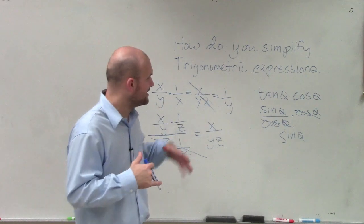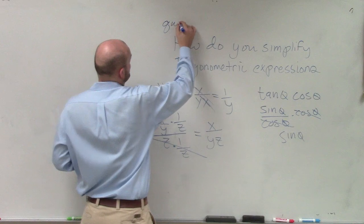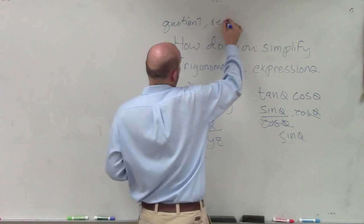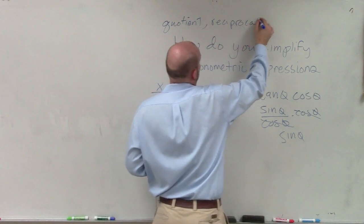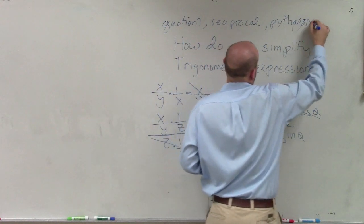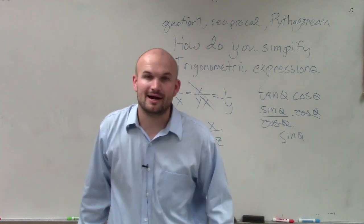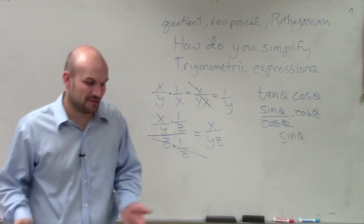You're always going to want to be using, think about the main ones that I would like to say is your quotient, reciprocal, or Pythagorean. Because I can give him the big P because he's a big guy. Those are going to be your main identities that you're going to be using.